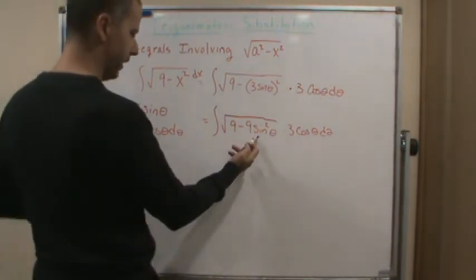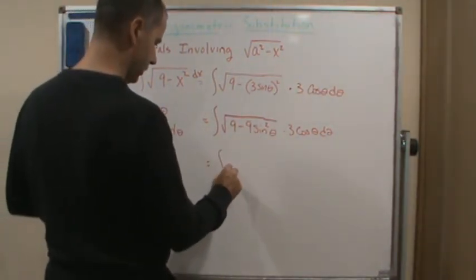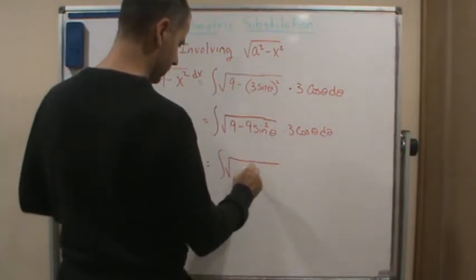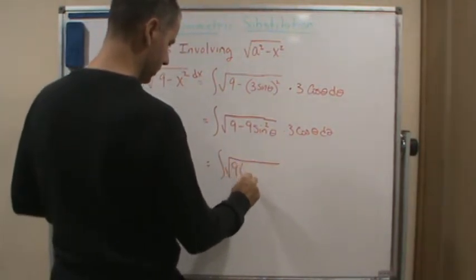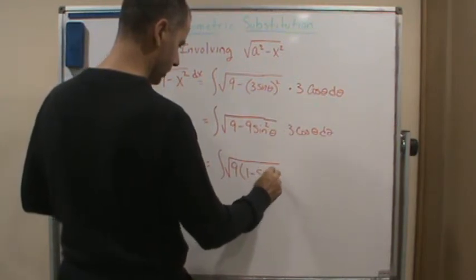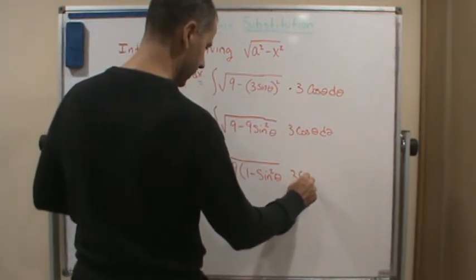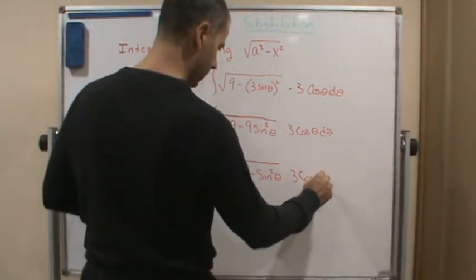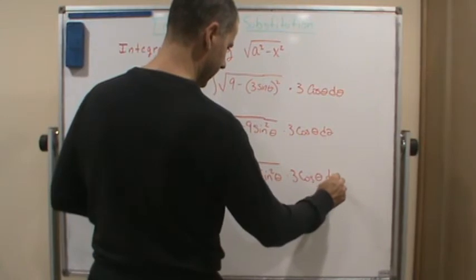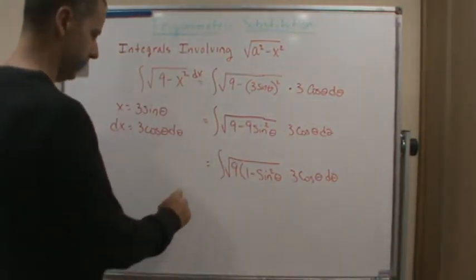And now let's factor out the 9. And this becomes 1 minus sine squared theta times 3 cosine theta d theta.